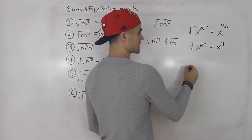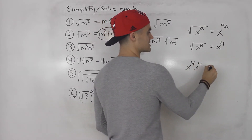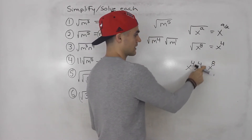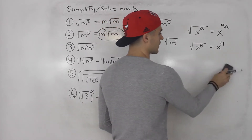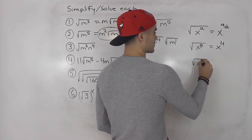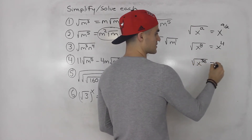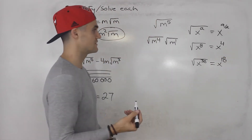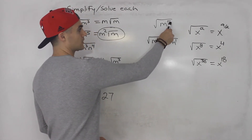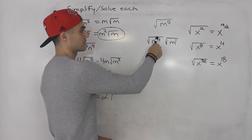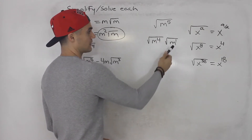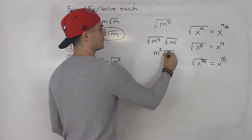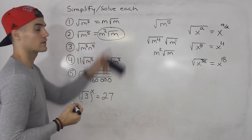That makes sense because x to the 4th times x to the 4th gives x to the 8th. You can use this for anything — for example, the square root of x to the 36th gives x to the 18th. So if you have an odd exponent, break it into the highest even exponent plus one. Square root of m to the 4th is just m squared — the radical goes away — and then root m can't be simplified, giving m squared root m.